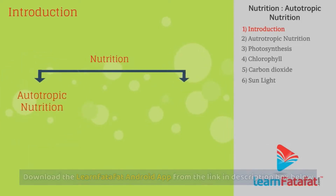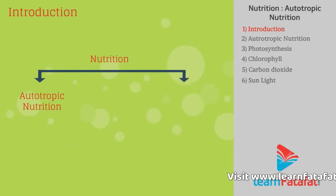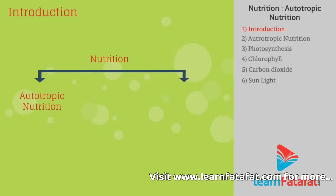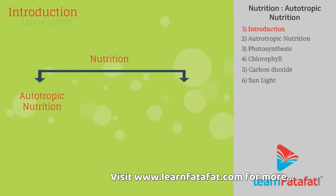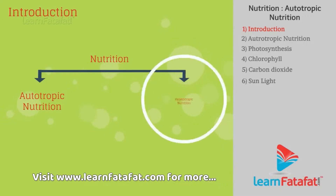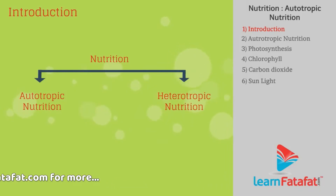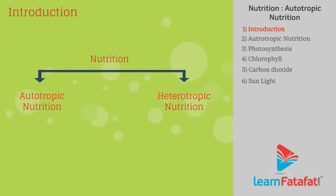Nutrition can be broadly classified as autotrophic nutrition, in which organisms prepare their own food, and heterotrophic nutrition, in which organisms depend on other organisms for food.